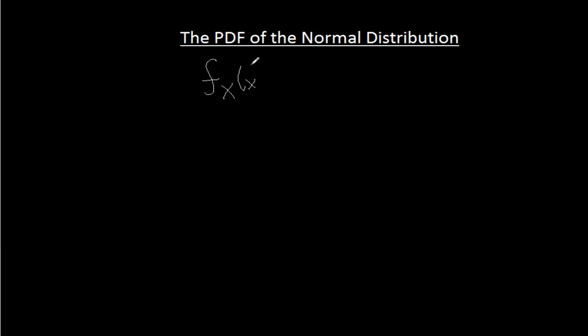We just said that it's not immediately obvious that this one over the square root of two pi sigma, right? What's up with that? What's up with that square root of two pi?